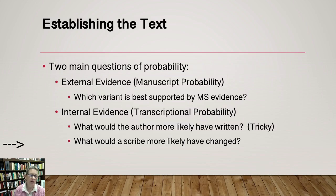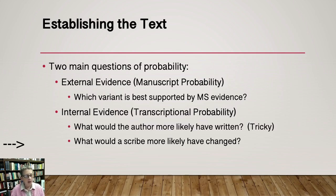Now we move on to further information about establishing the text. Here's where you need to pay good attention, because these are pieces of information and requirements to think logically about things that will matter a lot if you try to master this skill. There are two main questions of probability. One is external evidence; the other is internal evidence. External evidence is also sometimes called manuscript probability — external means we're looking at the external objects, the manuscripts themselves, the witnesses to the text, and looking at what they read, what variant they have in any variation unit. The question we'd be asking under external evidence would be: which variant is best supported by the manuscript evidence?